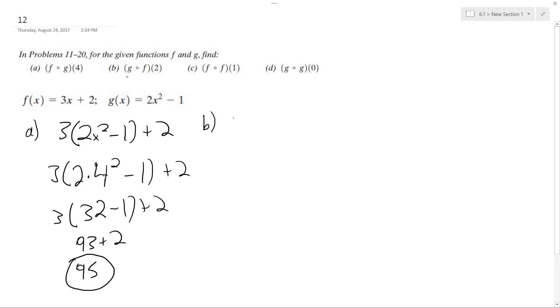All right, part B, it's just reversing rules. So g of f of 2, this becomes, for every x component in g, we plug in the value of f. So this becomes 2 quantity 3x plus 2 squared plus 2.